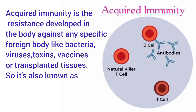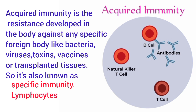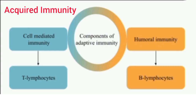Acquired immunity is the resistance developed in the body against any specific foreign body like bacteria, viruses, toxins, vaccines, or transplanted tissues. This type of immunity is also known as specific immunity. It is the most powerful immune mechanism that protects the body from invading organisms or toxic substances. Lymphocytes are responsible for acquired immunity.